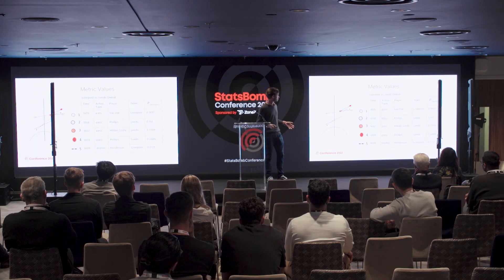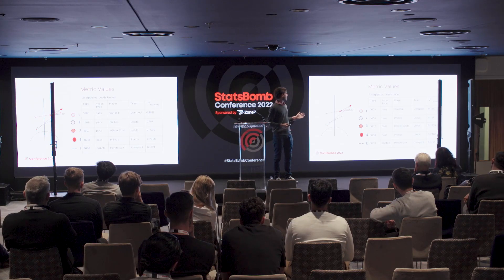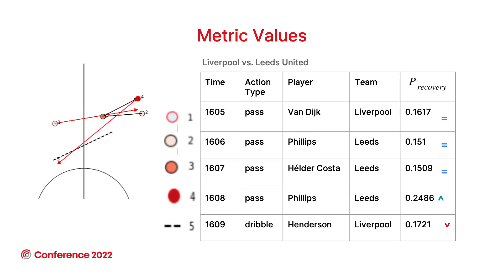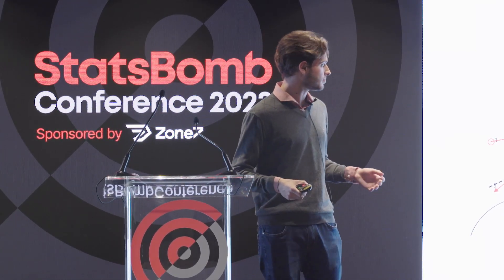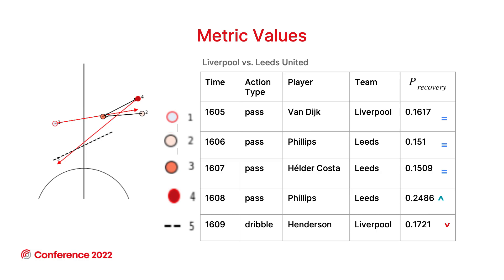Let's get into the example. We have a set of five actions from Liverpool against Leeds United. The first three actions have a pretty stable peer recovery. However, the first action is actually a wrong action by Van Dyke — but since our model doesn't consider action type and result, that's just on him, he made the mistake. For the fourth action, there is a rise because Phillips's pass is longer and to a more central region of the pitch, making it a riskier one. That's why peer recovery gets higher. Then Henderson finally gets the ball back to Liverpool with a stable value.